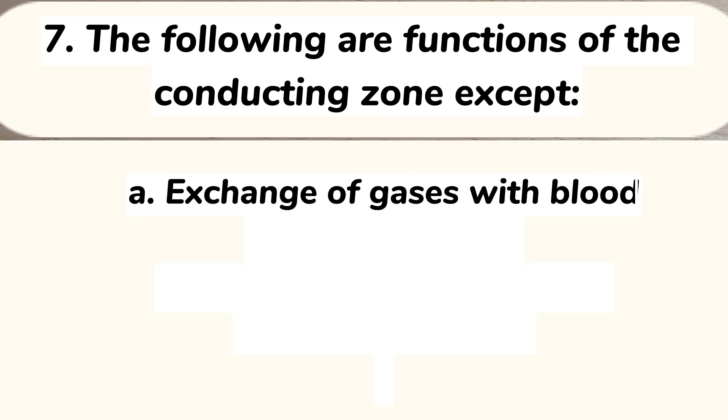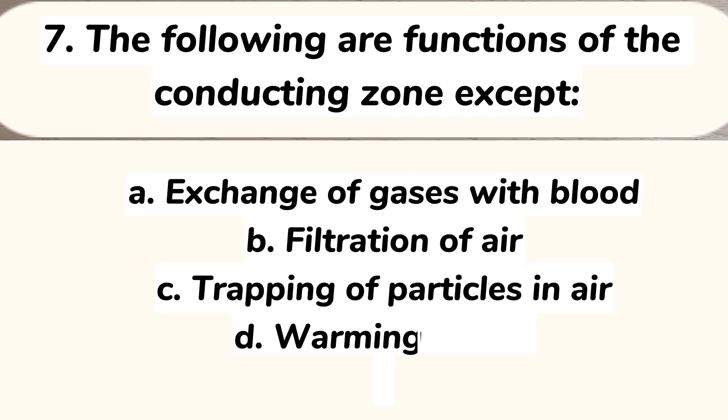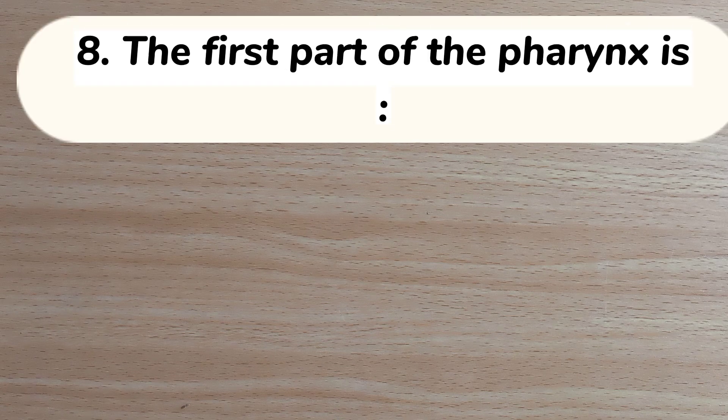Number 7. The following are functions of the conducting zone except: A. Exchange of gases with blood. B. Filtration of air. C. Trapping of particles in air. D. Warming the air. Answer: A. Exchange of gases with blood.